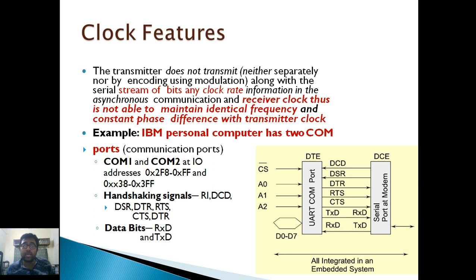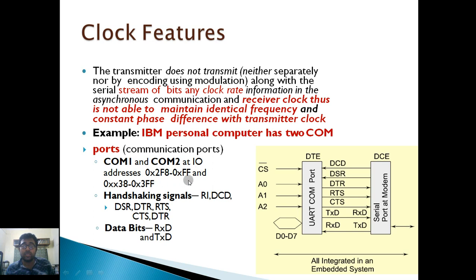An example of that is the IBM personal computer, which has two communication ports and supports a keyboard. The keyboard is basically an asynchronous communication port where, after each keyboard press, no clock signal is sent. The communication ports COM1 and COM2 are at specific IO addresses.